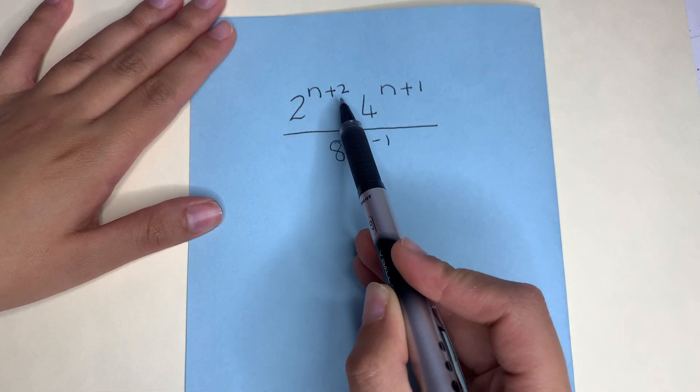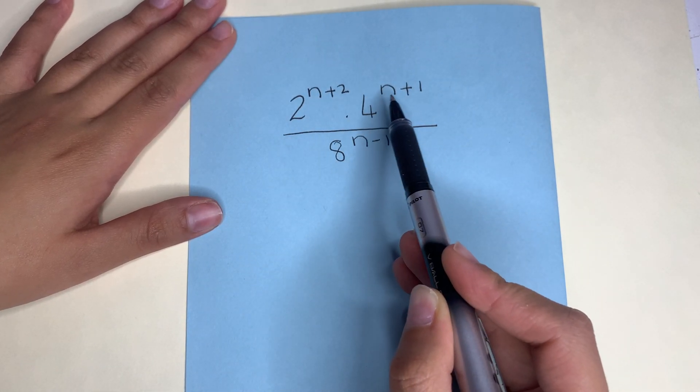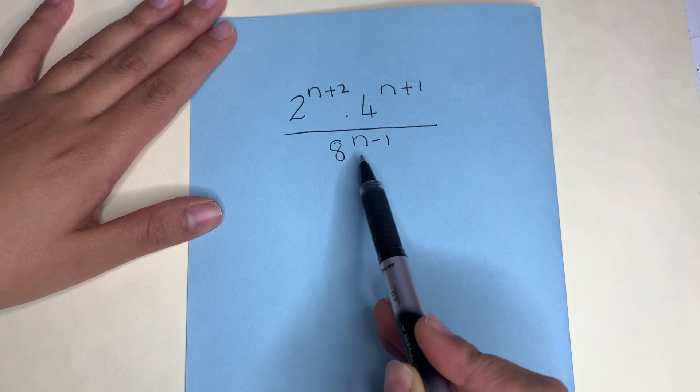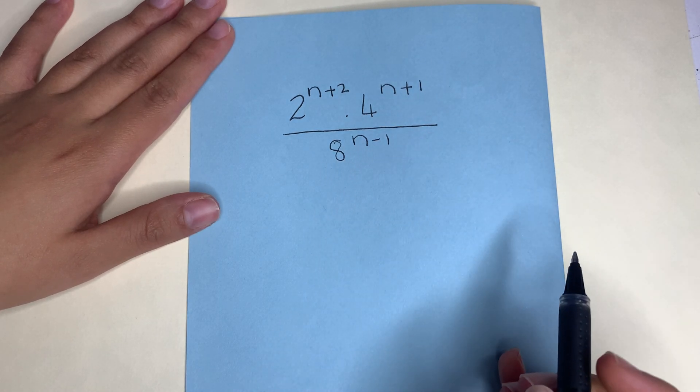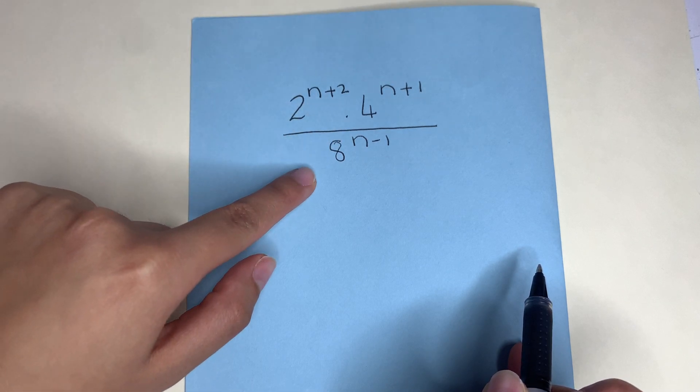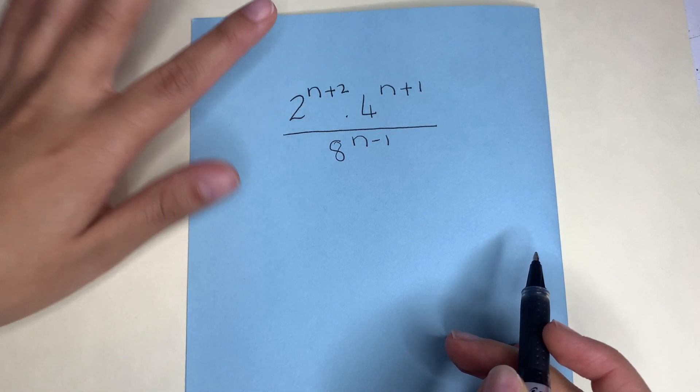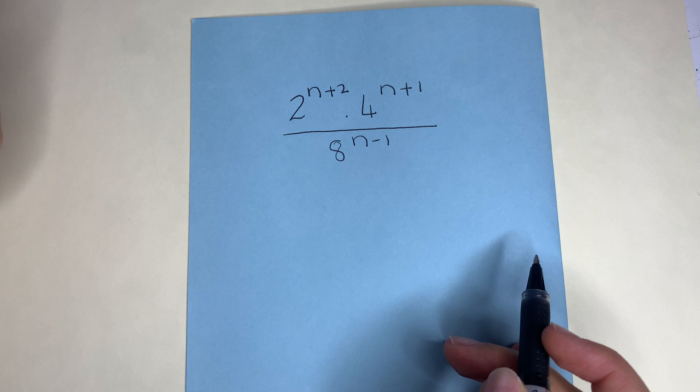The sum is 2 to the power of n plus 2 times 4 to the power of n plus 1 over 8 to the power of n minus 1. For starters, we can see all of these bases are not the same. So we are going to change them so that they are prime bases.